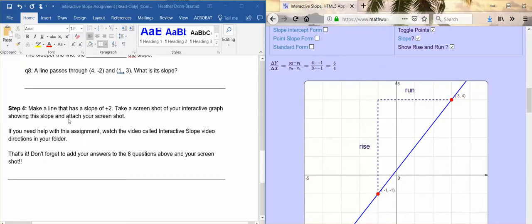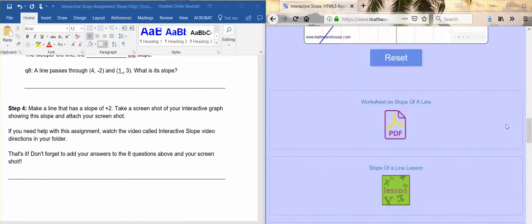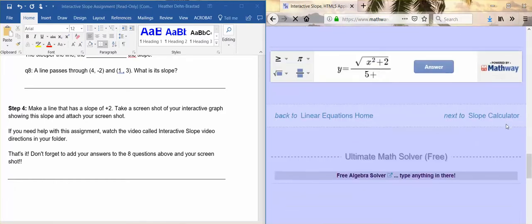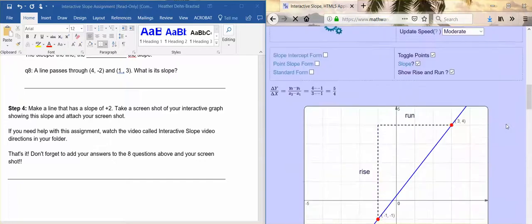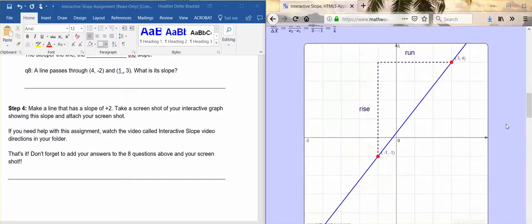The last part is to step four, to make a line that has a slope of plus two, positive two. Take a screenshot of your interactive graph showing the slope and attach your screenshot. There's several different ways to take a screenshot. The easiest way might be to use the snip tool.